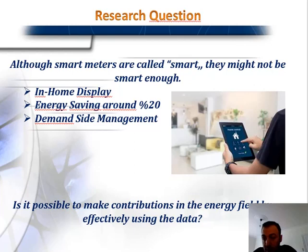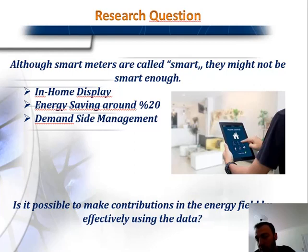Although smart meters are called smart, they might not be smart enough, because generally they share data only with the utility side every 15 minutes. However, we can also share this data with consumers — for example, we can reflect instantaneous consumption on in-home displays. Previous studies show that if we give feedback to customers about their instantaneous energy consumption, they can make smarter decisions and save around 20 percent of electricity. So our research question was: is it possible to make a contribution in the energy field by effectively using this data?